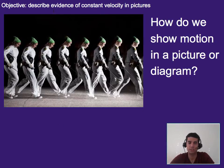The objective for this micro lecture is to describe evidence of constant velocity in pictures. This leads me to the first question: how do we show motion in a picture or diagram, let alone constant velocity or constant motion?